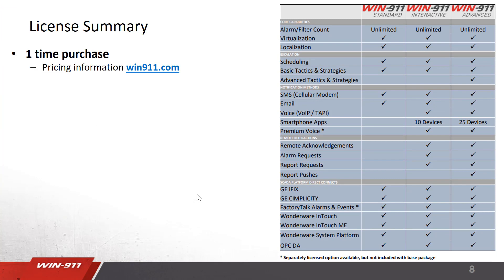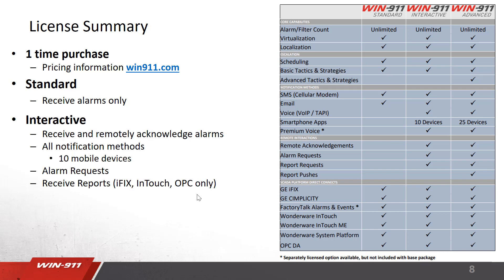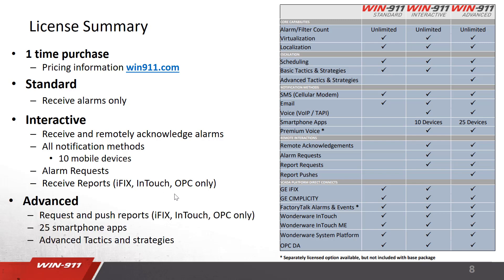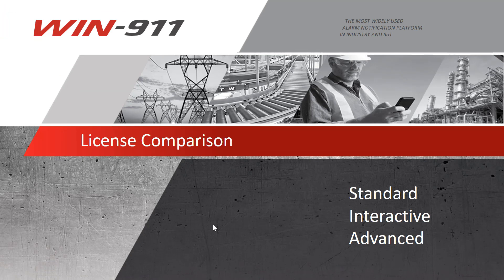A final summary of our licenses. This is a one-time purchase, and all pricing information is available on win911.com. The standard license offers the ability to receive alarms only using SMS or email. The interactive license lets you receive and remotely acknowledge alarms if you're using our direct connects, with access to the mobile app and all notifiers. You can do alarm requests and receive reports, but keep in mind reports are only available on iFix, InTouch, or OPC. Our highest package is the advanced license — it has everything on the previous license, plus the ability to push reports out, 25 smartphone apps, and the key differentiator: advanced tactics and strategies, which allow you to use a flowchart to make decisions based on labels, times of day, and calling certain people. Thank you for watching the license comparison video for standard, interactive, and advanced.